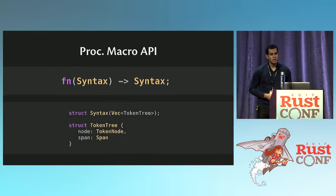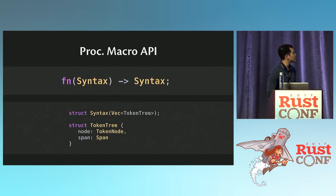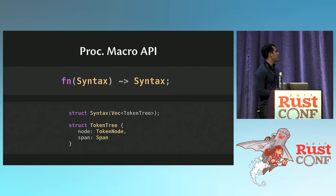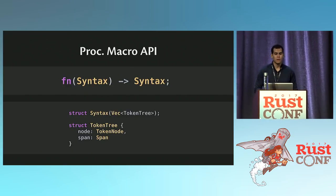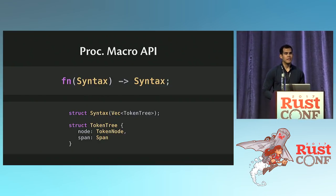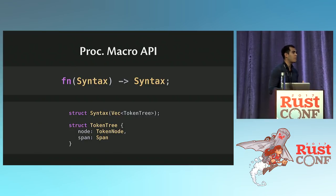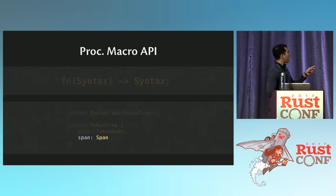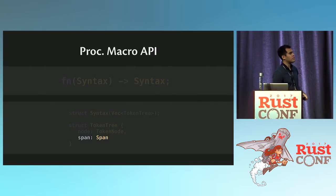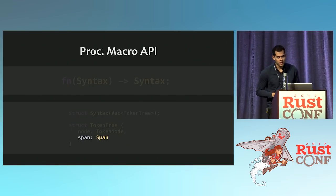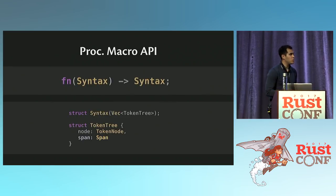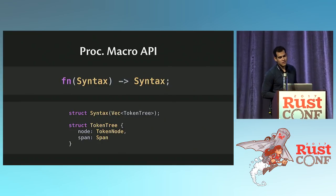How does Rocket make this code generation happen? The procedural macro API is actually pretty simple. Rust will call you and give you the syntax that the attribute was applied to, or the syntax inside of a macro call. Your job is to take that syntax and emit other syntax that should replace it — take some syntax, return some syntax, that's it. Syntax is really just a vector of token tree things. A token tree contains a node — like a semicolon, a plus, or a string literal — and a span, which says here is where in the code this token occurred. The span is useful for error reporting. Spans are extremely important and will be in the proc macros 2.0 API.